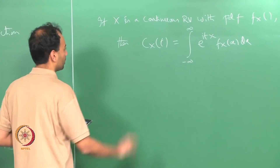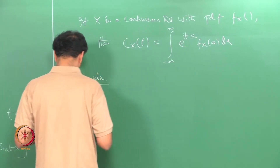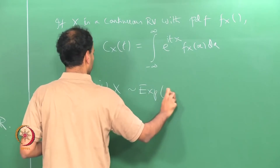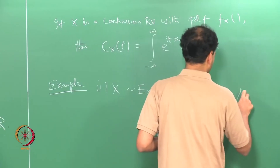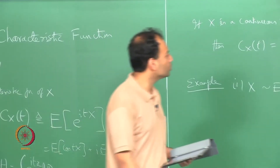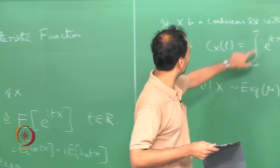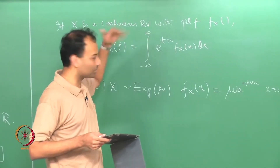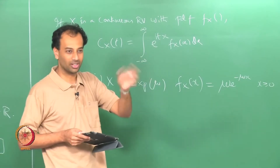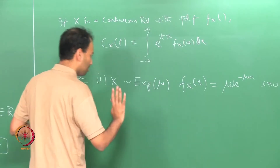Let me give an example. Let x be exponential with parameter μ, so f_x(x) = μ·e^{−μx} for x ≥ 0. You are used to computing Fourier transforms in signals and systems, so you would expect the characteristic function to be the same thing except you have to be careful about the sign. Wherever you have a minus in the Fourier transform you have to replace your argument with minus t to get the characteristic function.